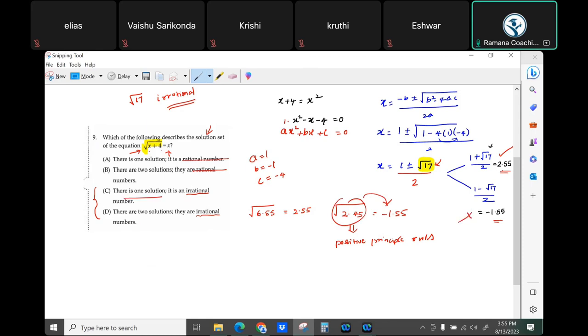So you have one solution that is irrational. That is your answer. If the book says D, ignore them. Is that clear to everyone? There has to be justification. Is that making sense everyone? Why you should ignore the other one?